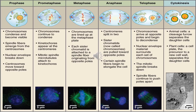Next comes cytokinesis. In animal cells a cleavage furrow separates the daughter cells, while in plant cells there is a cell plate — the new cell wall — that separates the daughter cells. That is the main important difference between the animal cell and the plant cell in cytokinesis.